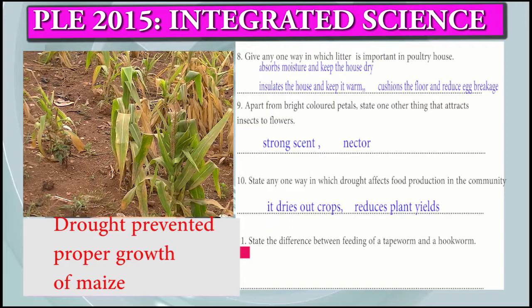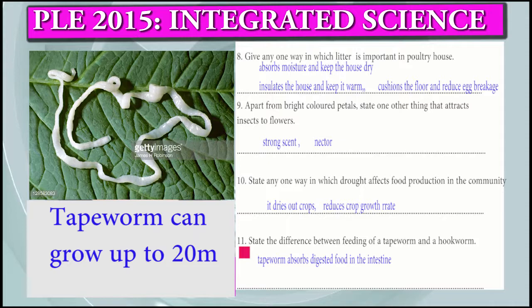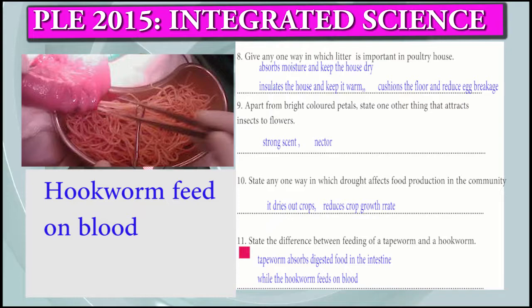Question 11: State the difference between the feeding of a tapeworm and a hookworm. A tapeworm absorbs digested food in the intestines. A hookworm feeds on blood.